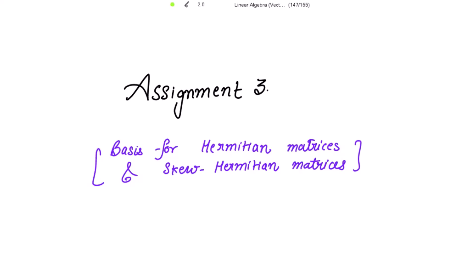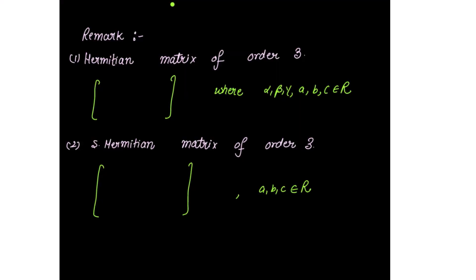Assignment 3: find the basis for Hermitian matrices and skew-Hermitian matrices. Let's understand what a Hermitian matrix is. For a Hermitian matrix of order 3, write alpha, beta, gamma in the diagonal, then a, iota*a, negative iota*a, then b, iota*b, negative iota*b, then c, iota*c, negative iota*c. Such a matrix is a Hermitian matrix of order 3, where alpha, beta, gamma, a, b, c all belong to the real numbers.